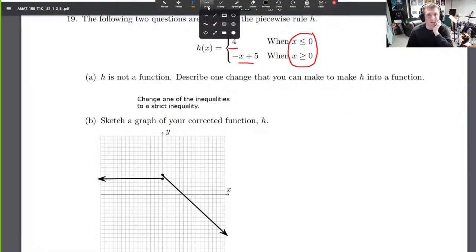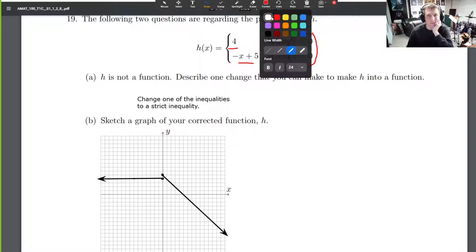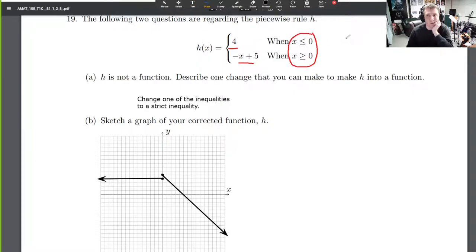Okay, what that means is take one of these less than or equal to or greater than or equal to—just one of them—and change it into that, or change this other one into that. Either one of them doesn't matter. That's a change you could make, but there's others.